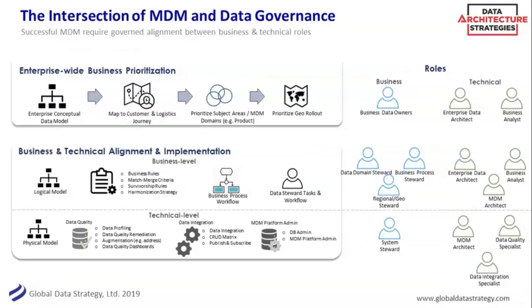This is a kind of busy, dense slide — getting all these rights is the sweet spot. MDM involves a lot of different people in the business. At the first level is really the enterprise business side: what are we prioritizing, what do we master? Give that a lot of thought, especially since mastering can be hard. Make sure you have the right case that everyone understands the value, and you pick the right domain. A conceptual data model can help with that — just: we have products, customers, invoices. What's the right thing to master?